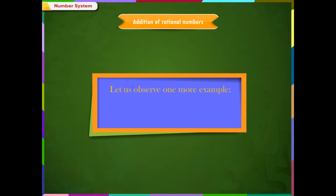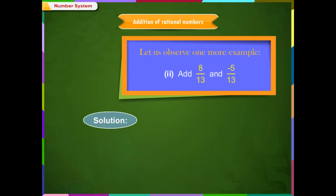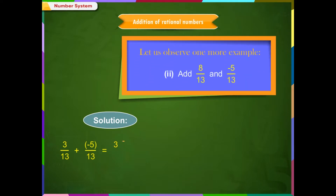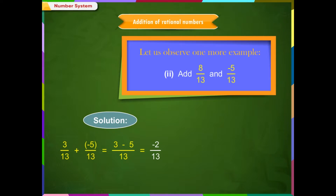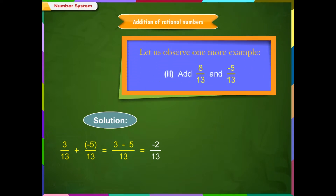Let us observe one more example. Example 2: Add 8/13 and -5/13. Solution: 8/13 + (-5/13) = (8 - 5)/13 = -2/13. Since 3 - 5 = -2, therefore 8/13 + (-5/13) = -2/13.